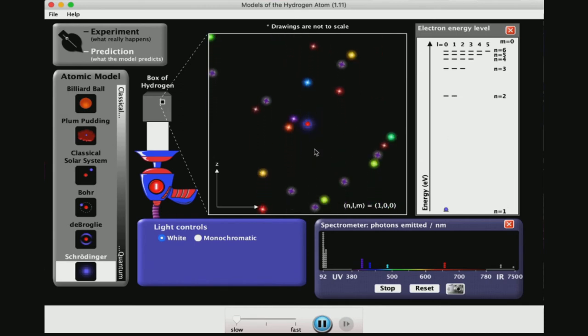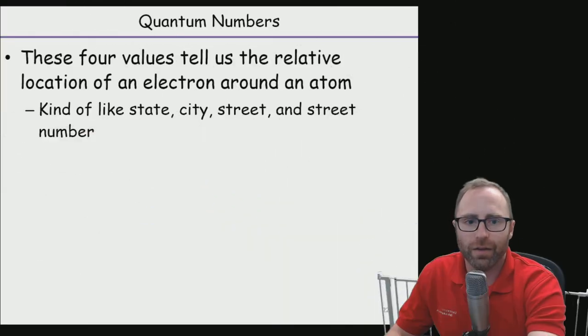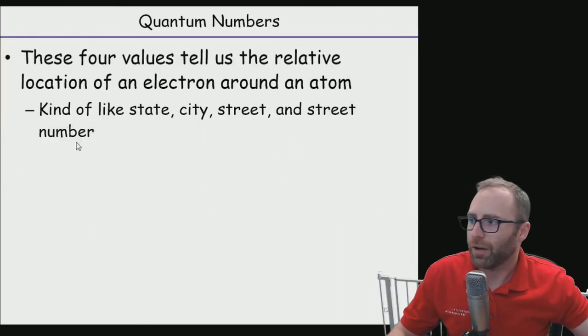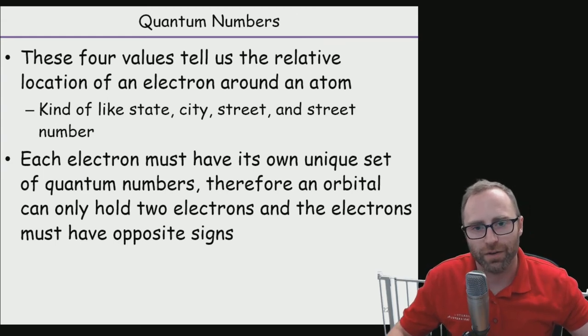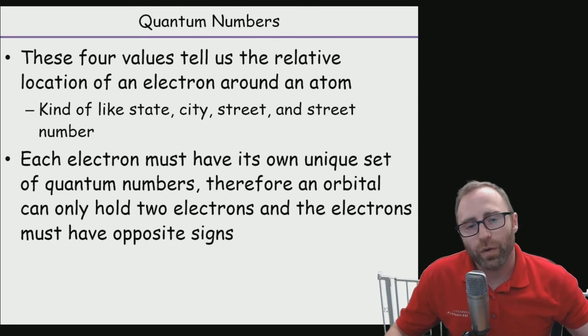One thing that you might notice here at the bottom is that we have these three sets of coordinates, this N, L, and M. So, this M sub L is our orientation in space. Sometimes we're going to see these orbits go along the X axis, sometimes on the Z axis, so up and down, and the Y axis is really coming in and out of the screen at you. We could watch this for quite a while to go through all the different kinds of shapes of orbitals that we might expect to see. Or, we can show you what some of these are. Electrons have their own unique set of quantum numbers. Each orbital is only going to be able to hold two electrons in it.